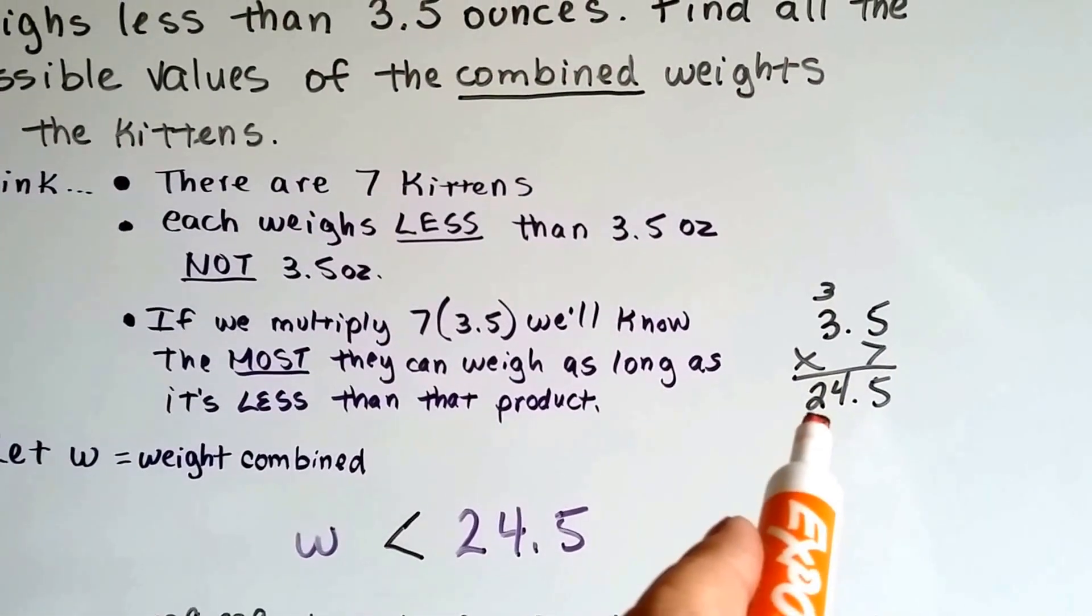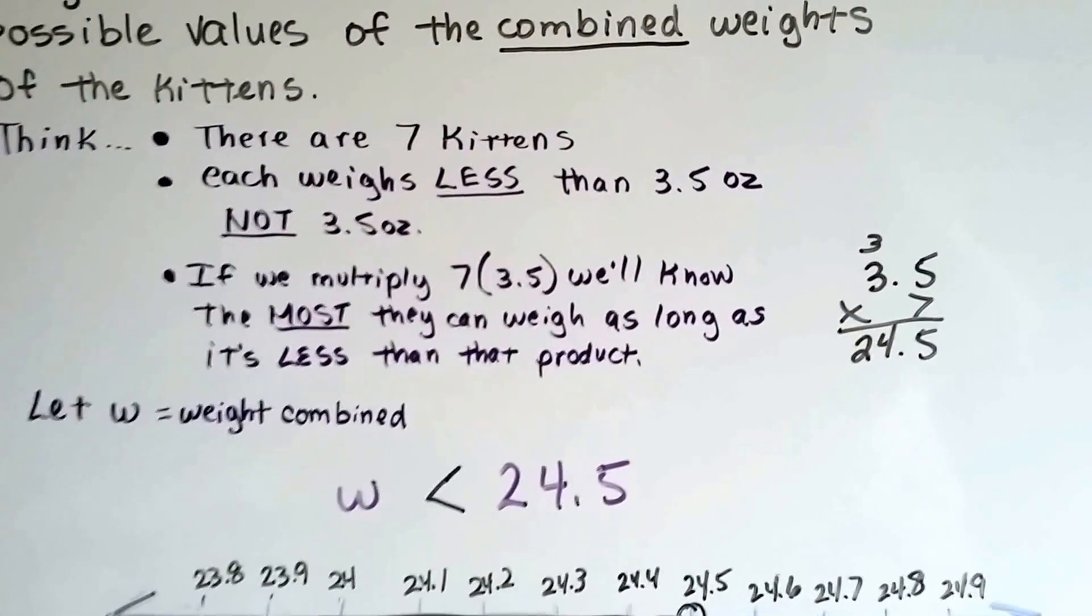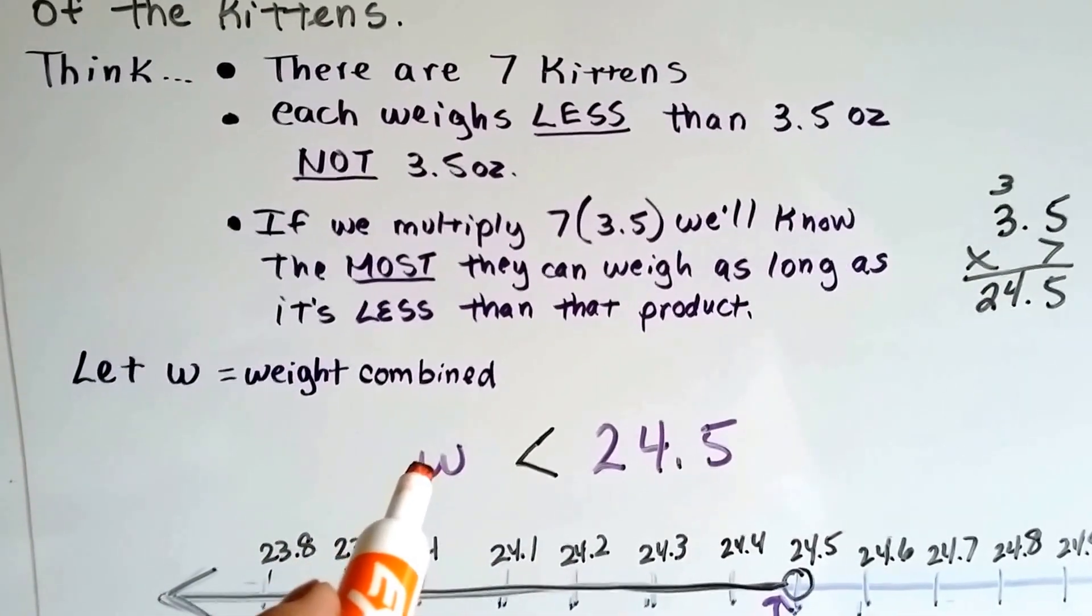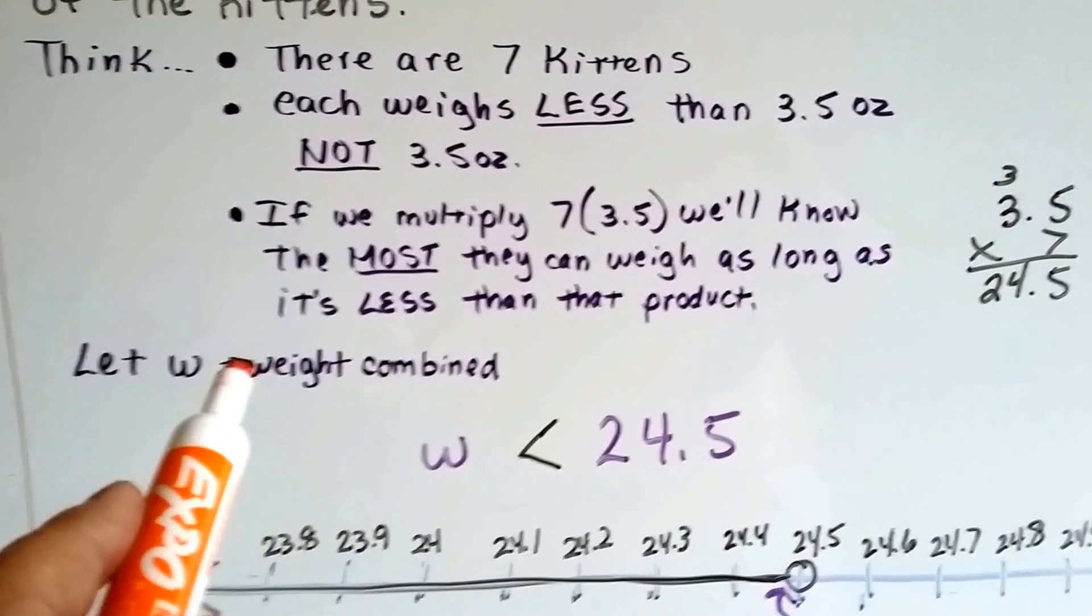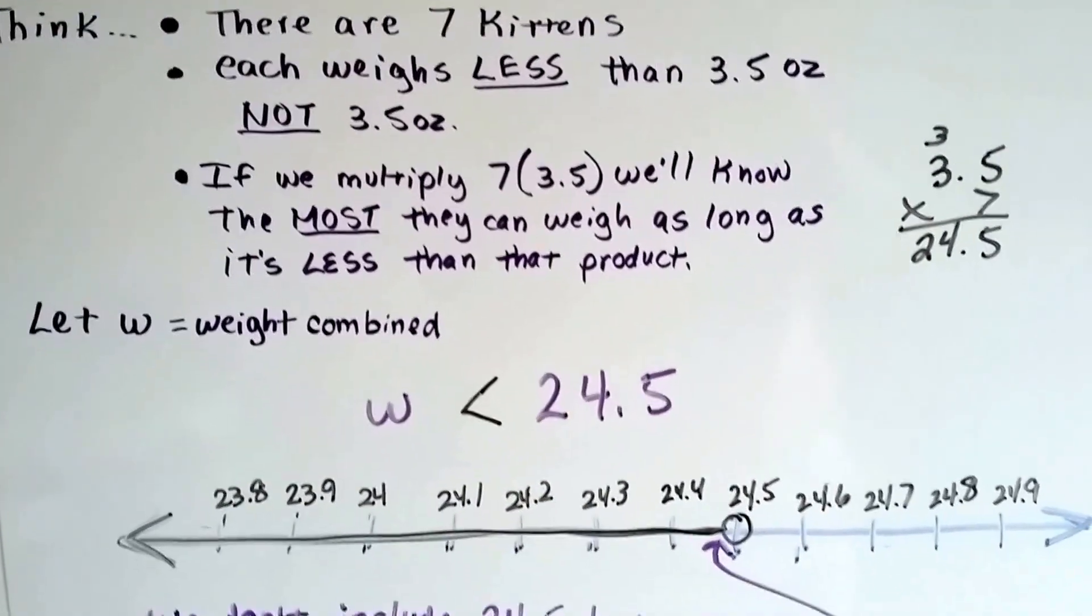So we multiply it and find out that 3.5 times seven is 24.5. So our equation is going to be that w, if we let w be the weight combined, has got to be less than 24.5.